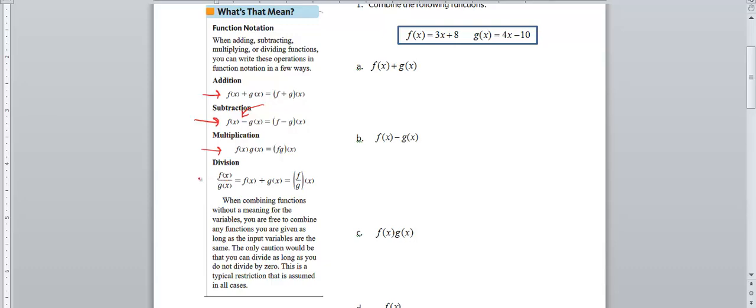And then division, this one actually gets written three different ways. It gets written as a fraction with a division sign, and then also just one function on top of the other function. So when you combine the division here, you notice down here at the bottom, they do make a case that you cannot divide by zero.